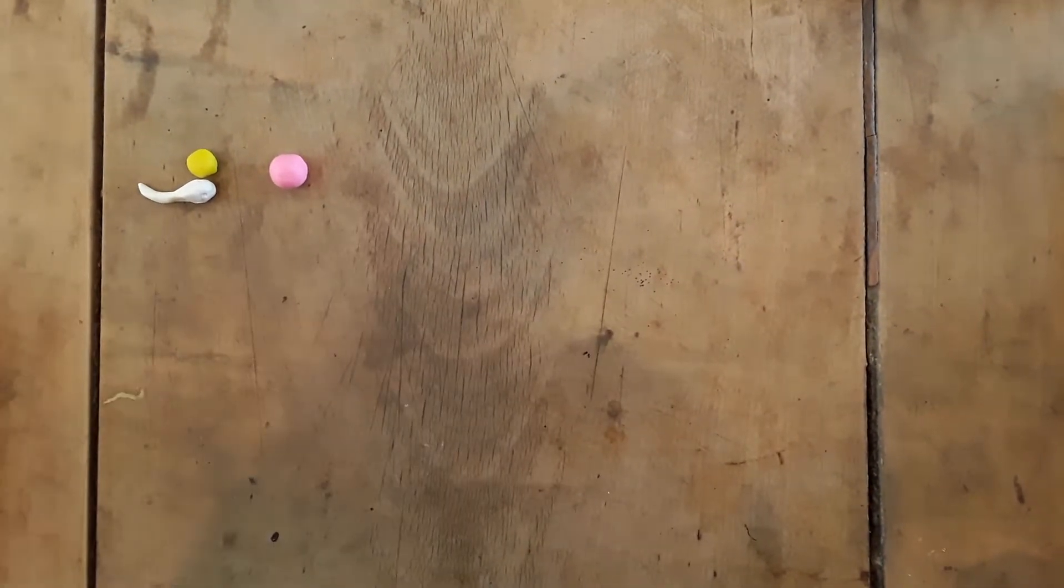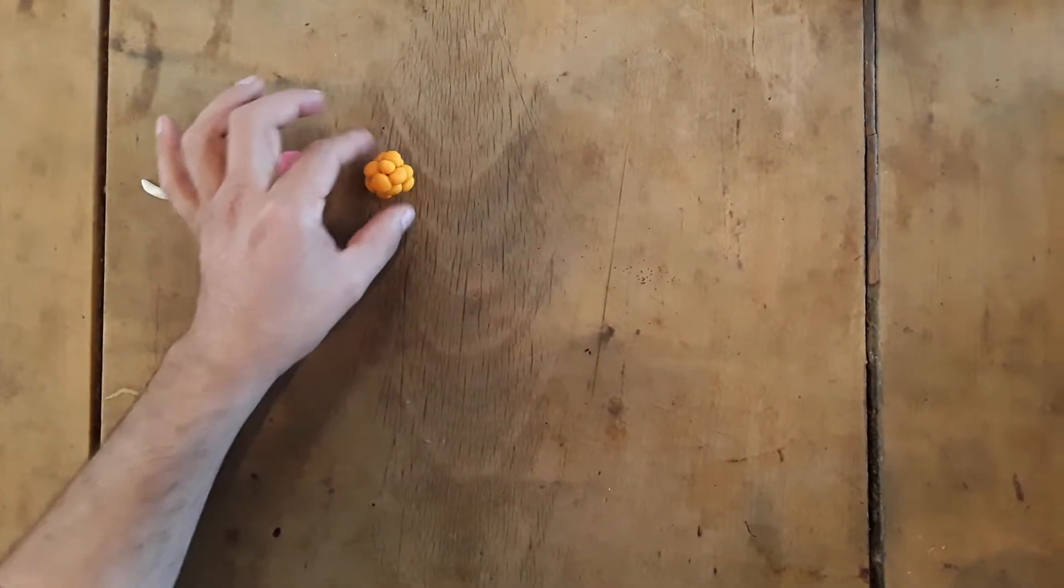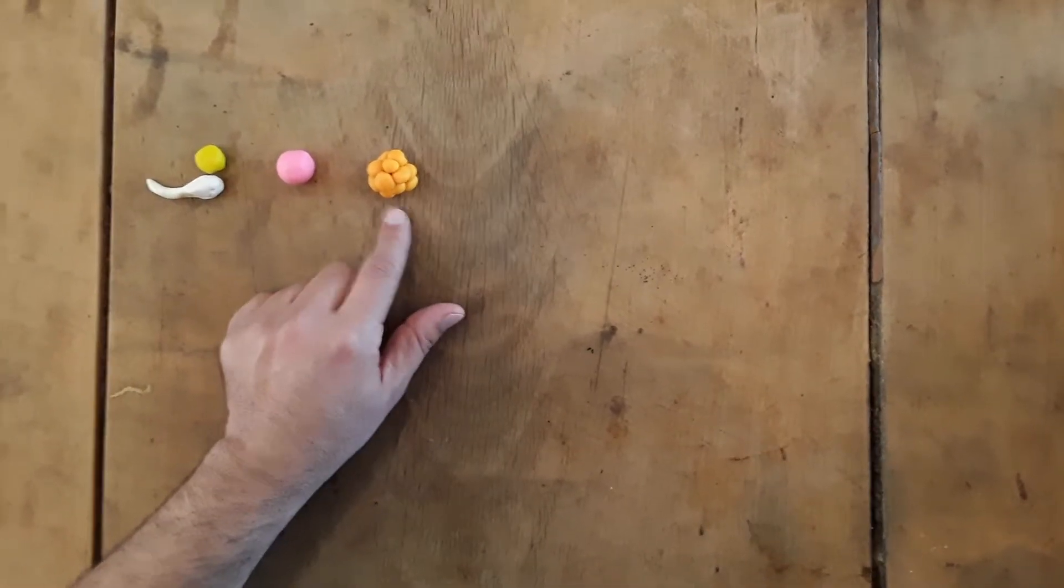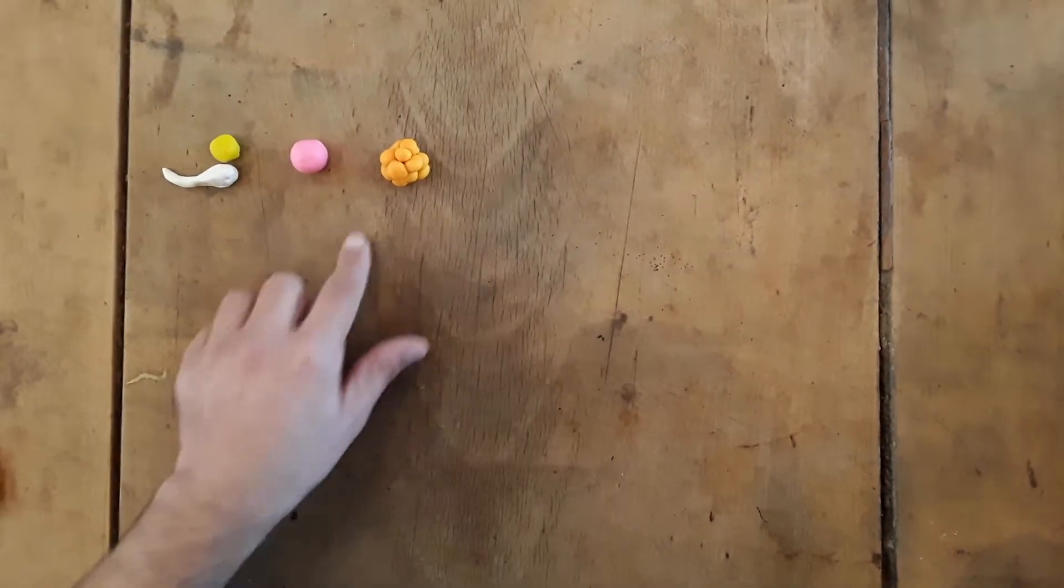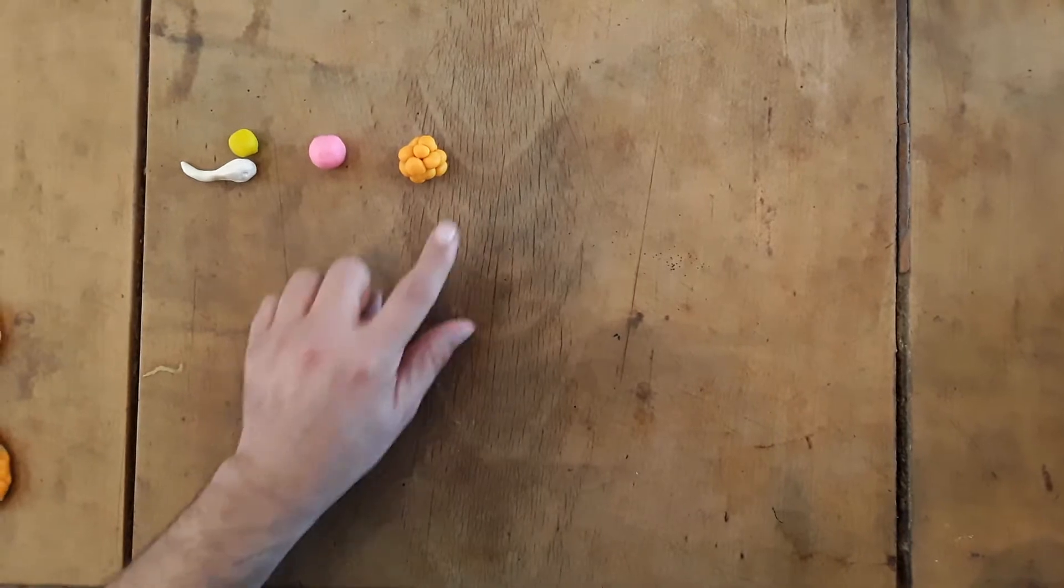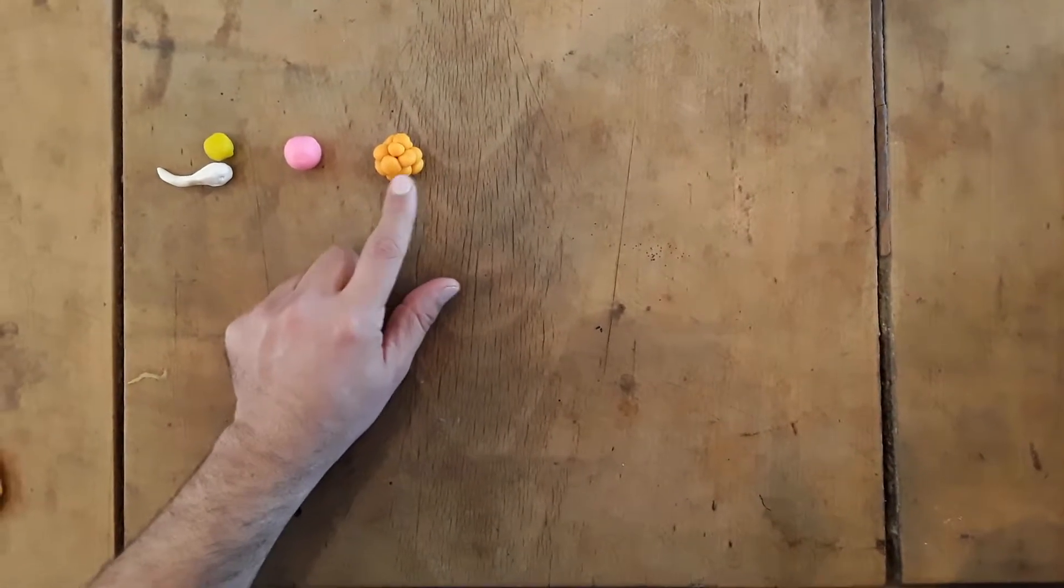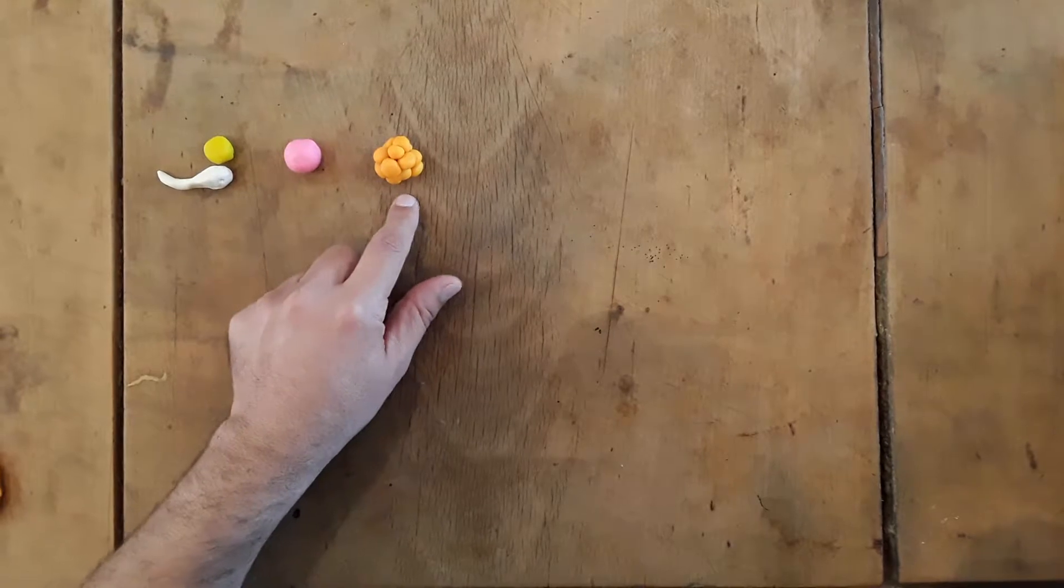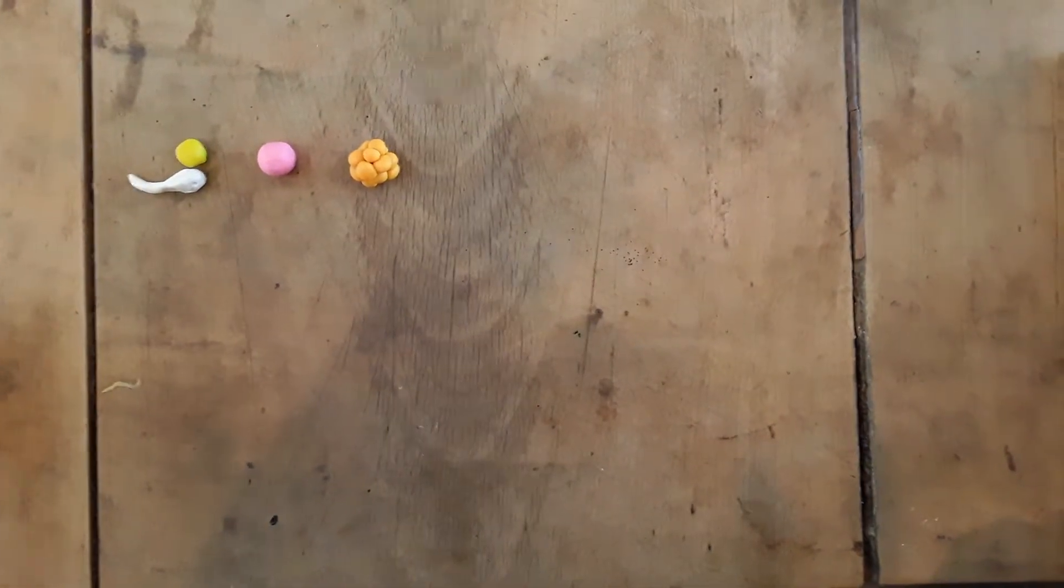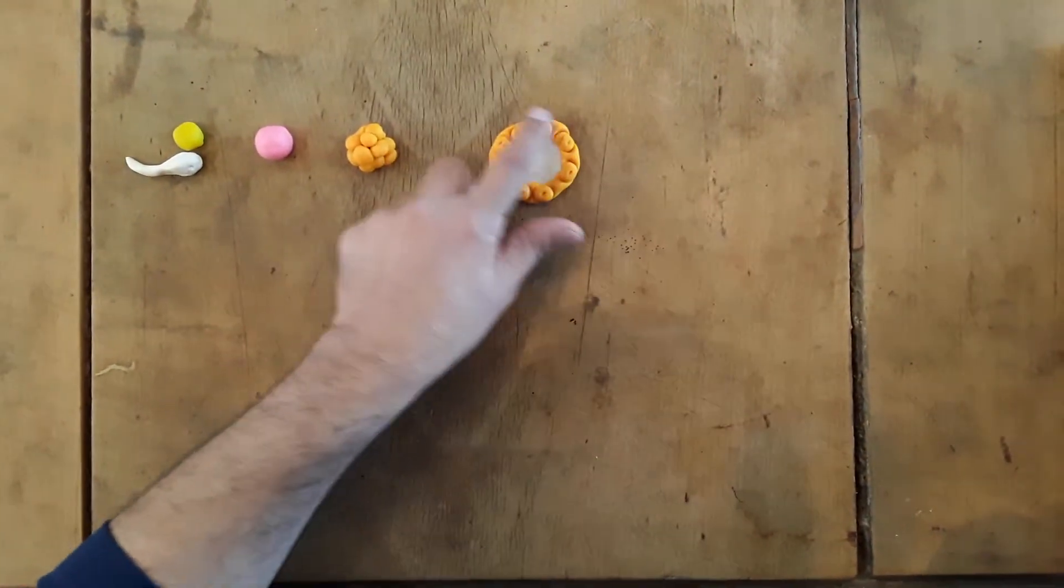Through mitotic division, this zygote is going to start to divide and become a solid cluster of cells called a morula. Due to the interior cells not having as good access to nutrients, this morula is going to start to spread out, with these cells spreading out to the outer part.